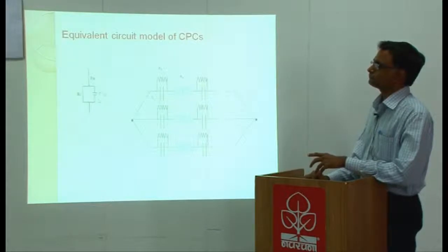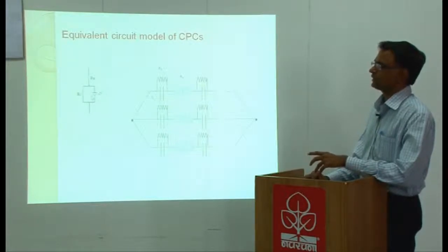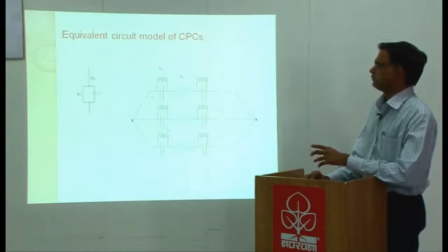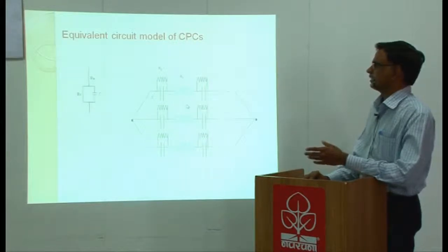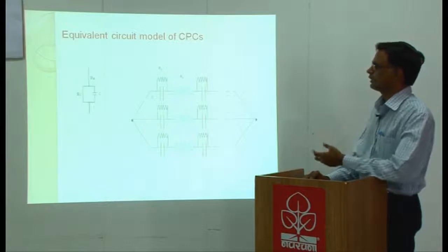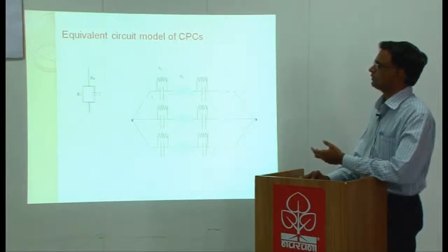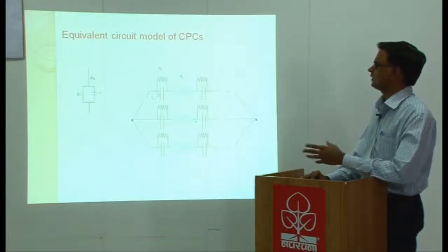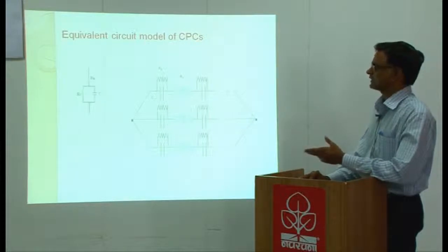This is the inter-granular capacitance or junction capacitance. This is the more realistic picturization of how a conducting polymer composite can be thought of. There could be a series of this kind of parallel combination of capacitors and resistors with a series resistor connected to that in n number of ways.